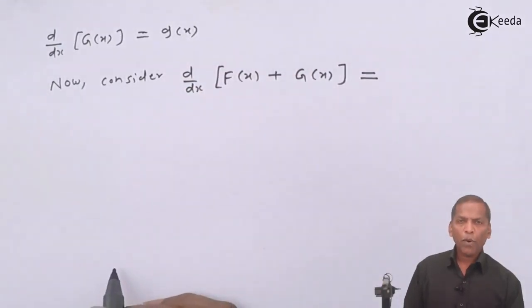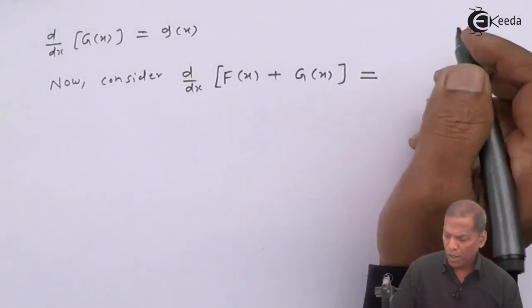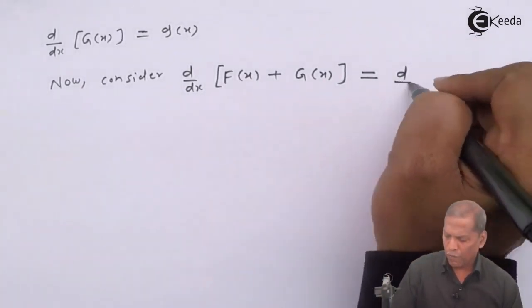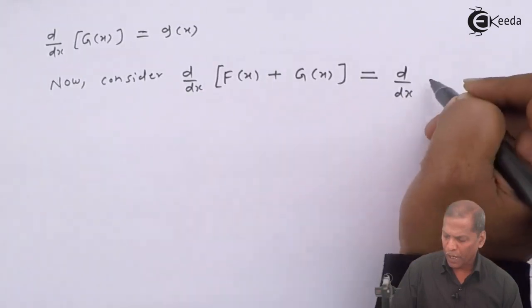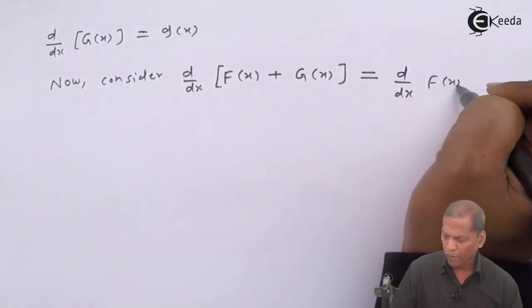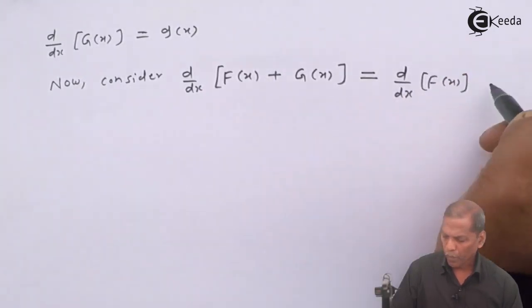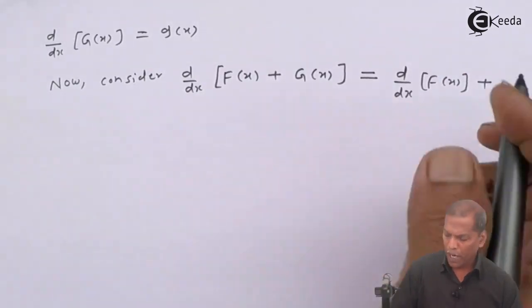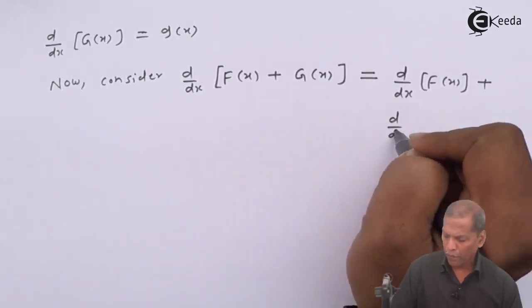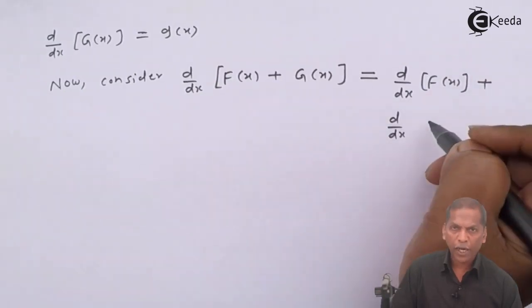So, that gives us d/dx of capital F(x) plus d/dx of capital G(x).